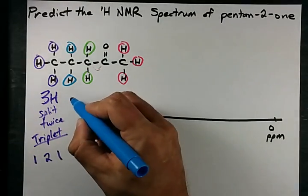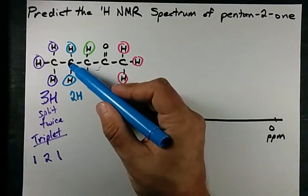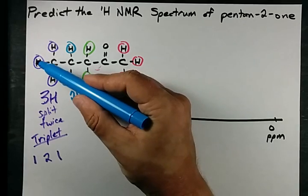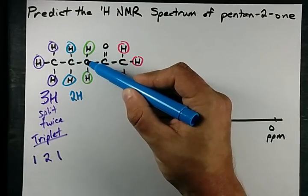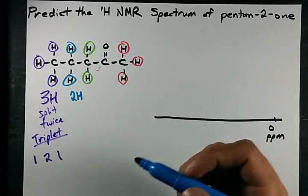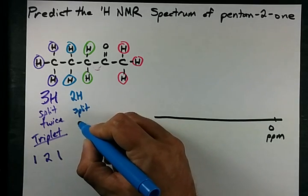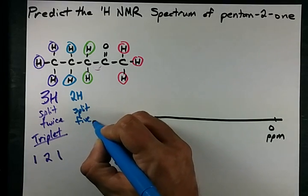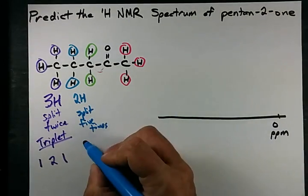The H's circled in blue here there are two of them. How many hydrogens are adjacent to him? One-two-three on this carbon and two on this carbon. That makes five in total. I like to say that this guy is split five times. That makes it into a what's called sextet.